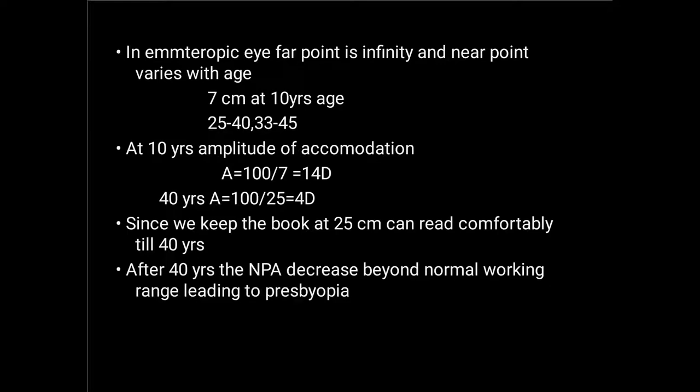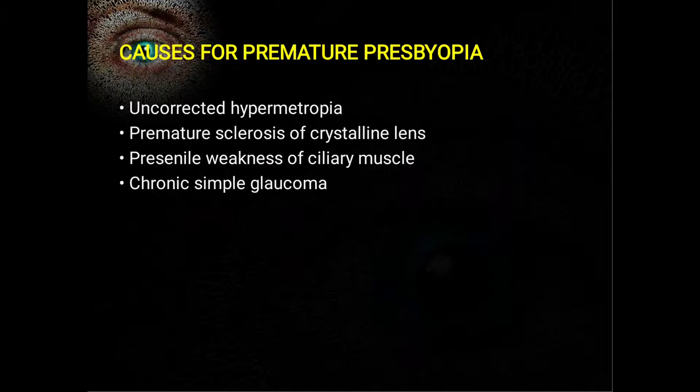In an emmetropic eye, the far point is at infinity and the near point varies with age — it is around 7 centimeters at 10 years of age. As we grow older, the near point recedes, and at the age of 40 it is around 25 centimeters. Since we can keep a book at 25 centimeters we can read comfortably at age 40, but as we age more the near point recedes beyond 33 centimeters, leading to presbyopia.